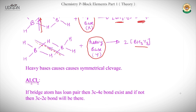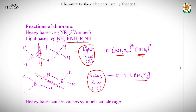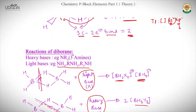Now move towards Al₂Cl₆. The rule is: if the bridging atom has a lone pair, then a 3-center 4-electron bond exists; if not, then a 3-center 2-electron bond exists. Here in B₂H₆ the bridging atom is hydrogen, which does not have a lone pair — that is why it has 3-center 2-electron bonds.